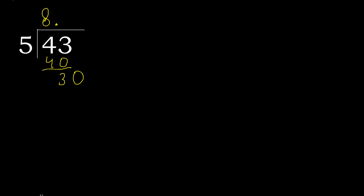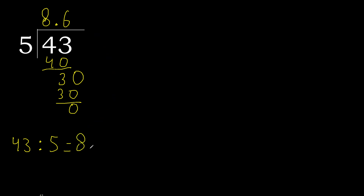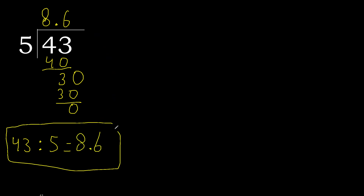5 multiplied by 6 is 30 — ok, not greater. 30 minus 30 is 0. Therefore finish. So 43 divided by 5 is 8.6.